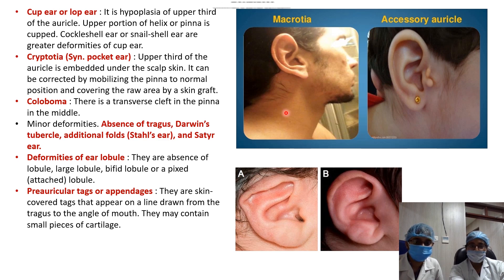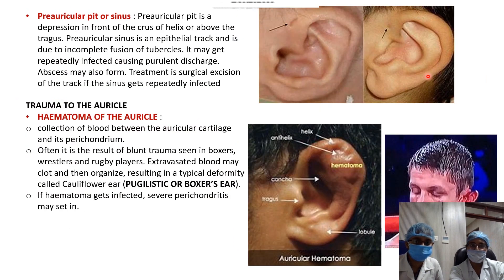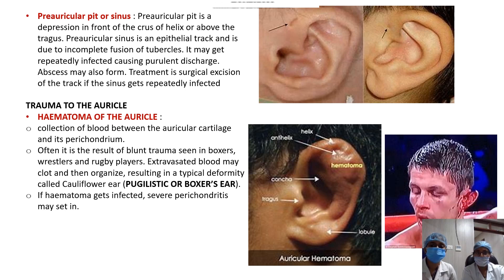Preauricular tags or appendages are skin-covered tags that appear on the line drawn from the tragus to the angle of the mouth and may contain small pieces of cartilage. Preauricular pit or sinus: a preauricular pit is a depression in front of the crux of the helix or above the tragus. The preauricular sinus is an epithelial-lined tract due to incomplete fusion of the tubercles; it may become repeatedly infected, causing purulent discharge or abscess. Treatment is required only if the sinus gets repeatedly infected.